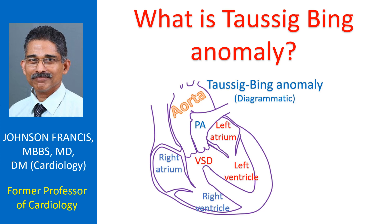Taussig-Bing anomaly is double outlet right ventricle with sub-pulmonic ventricular septal defect and high pulmonary blood flow with pulmonary hypertension. Hence it is a TGA-like physiology. There is a transposition of the aorta to the right ventricle and malposition of the pulmonary artery. It was described by Helen B. Taussig and Richard J. Bing in 1949.